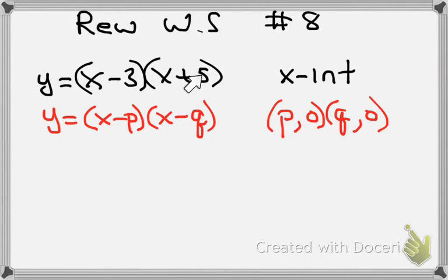So from this equation that they gave us, what are our x-intercepts? That is factored form. So what are my x-intercepts? What is p? It's going to be a positive 3. It's going to be the opposite because our formula says minus, right? So it's going to be a positive 3. So our x-intercept then is going to be 3,0. What's q? What's the opposite of positive 5? So it's going to be negative 5, 0. And those are our two x-intercepts.